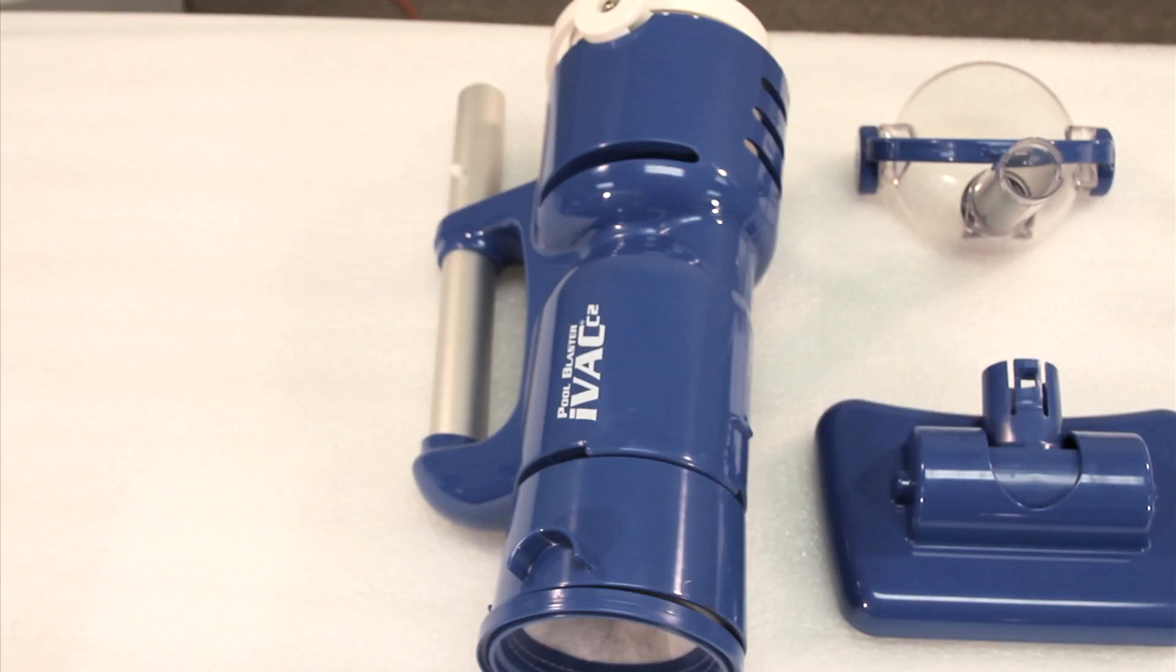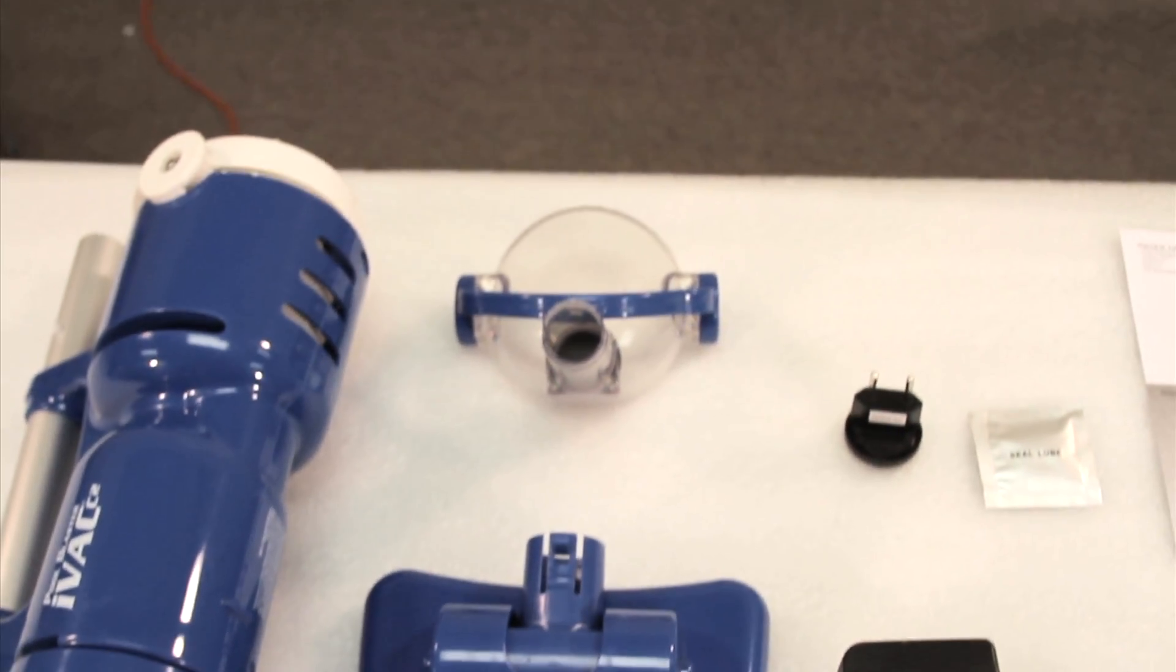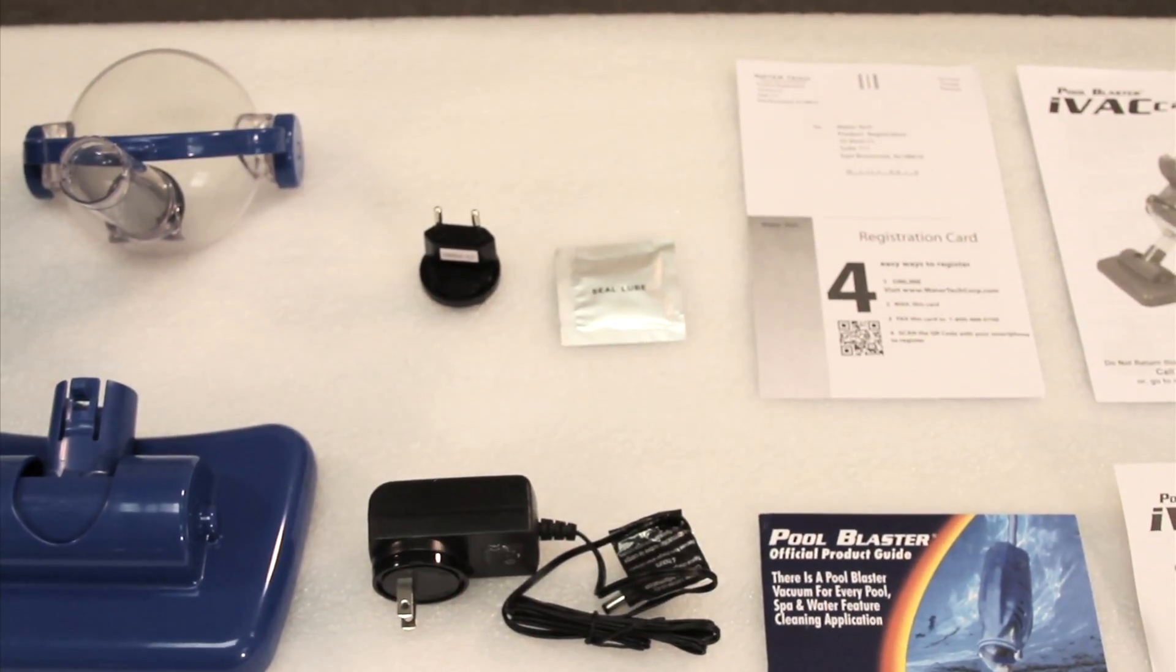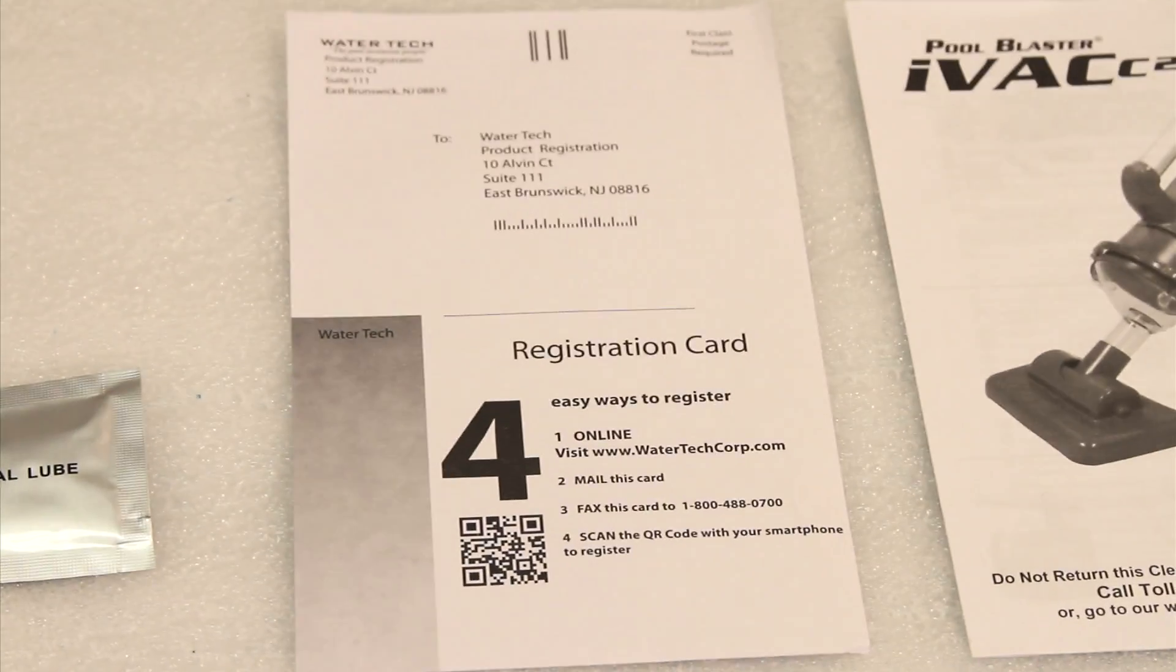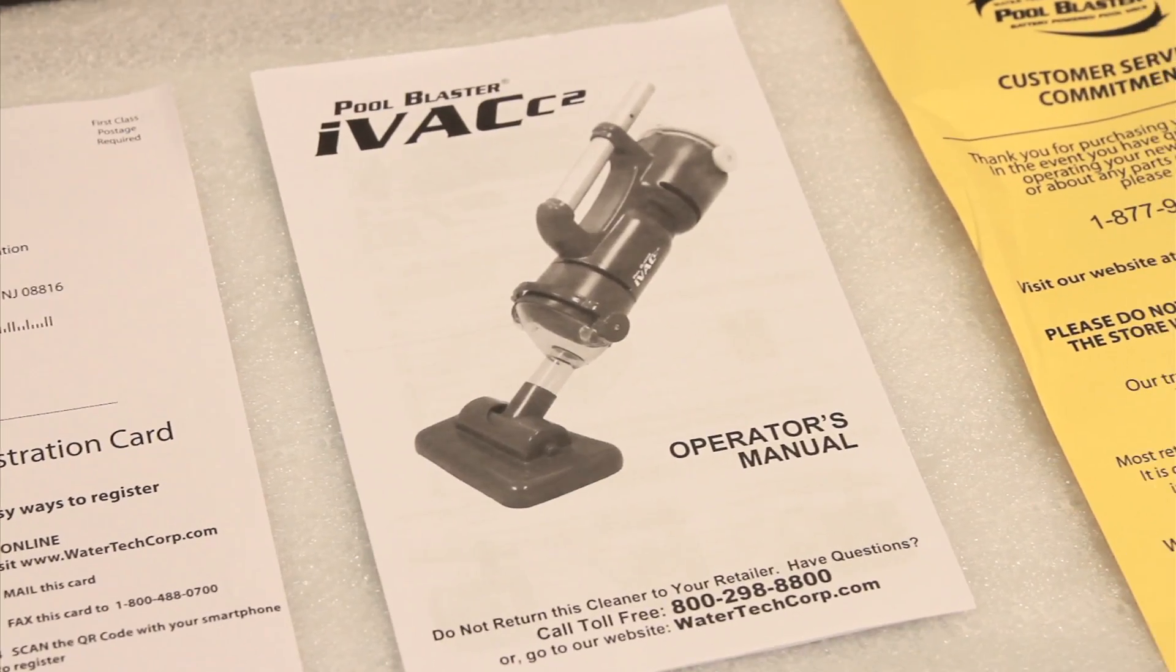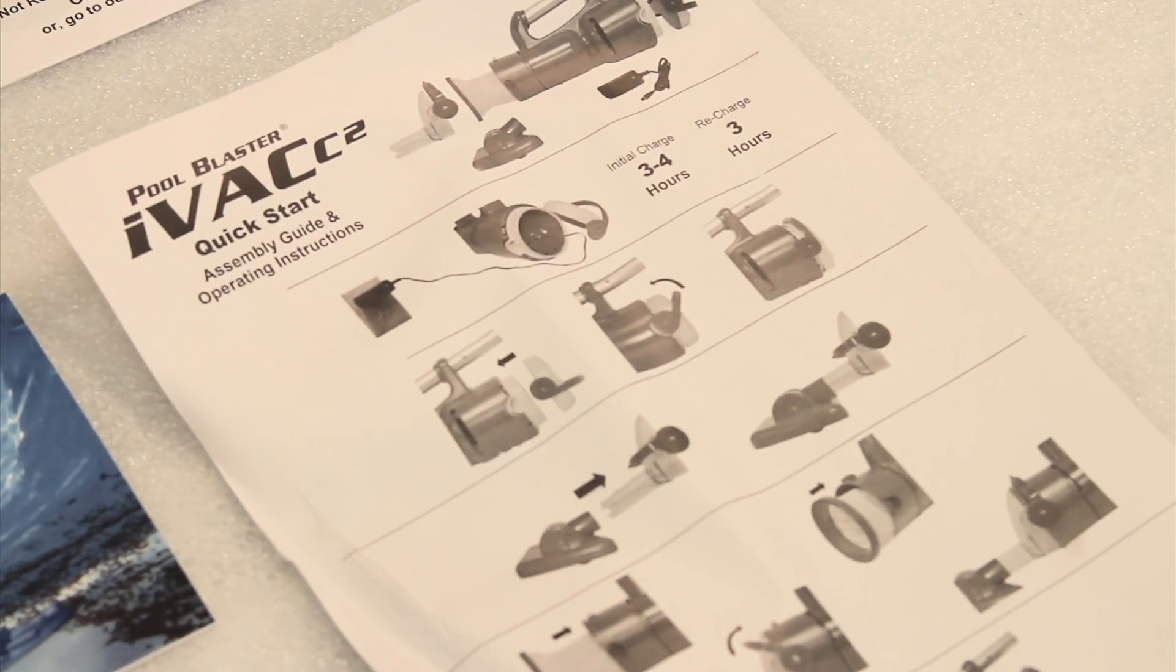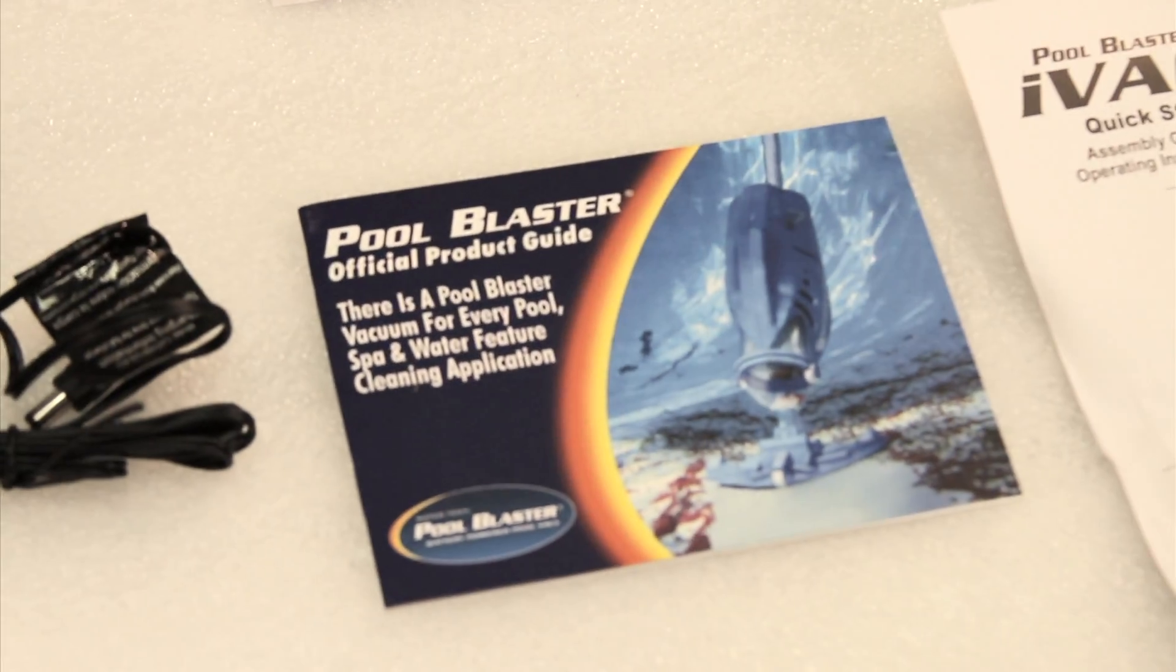This is the IVAC C2 motor and debris chamber, the vacuum head, the nose cone, the power supply and European adapter, the registration card. It's a good idea to send in your registration card or register online. The operator manual, the customer service card, the IVAC C2 quick start guide, and the pool blaster product guide.